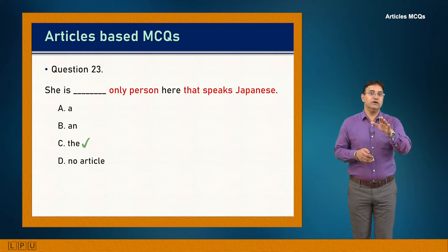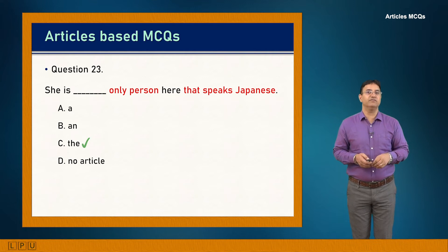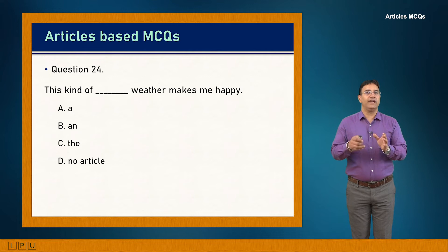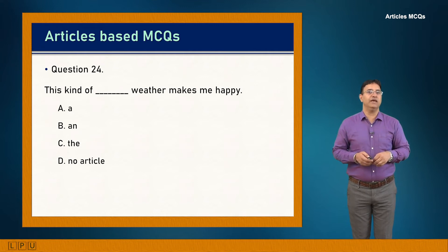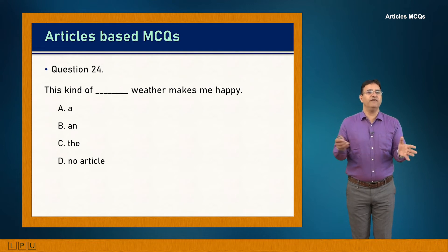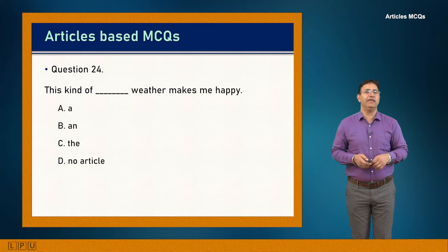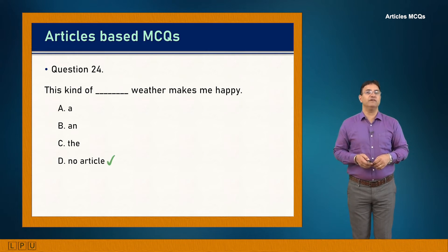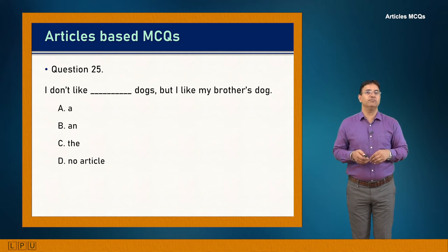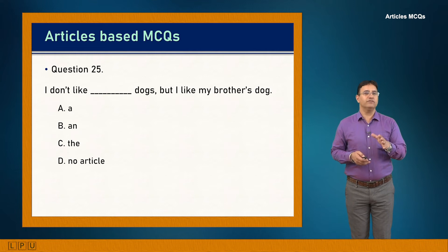Question 23: She's dash only person here that speaks Japanese. The person is identified and definite. Answer is C: 'She is the only person here that speaks Japanese.' Question 24: This kind of dash weather makes me happy. No article is needed after 'this kind of.' Answer is D: 'This kind of weather makes me happy.'